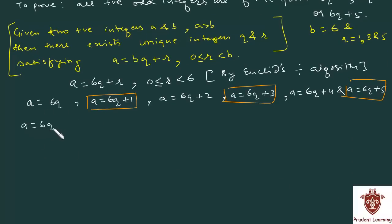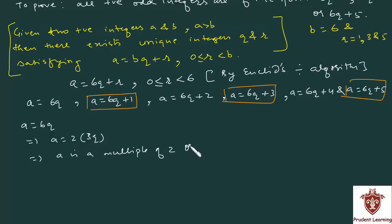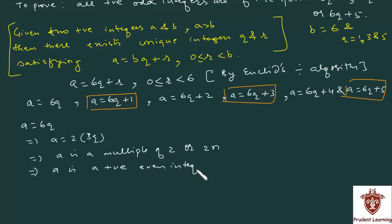If a is equal to 6q, it can also be written as a is equal to 2 times 3q, which implies that a is a multiple of 2 — it can be written in the form 2n. Any number that is a multiple of 2 is even, so a is a positive even integer. But we are given that a is a positive odd integer. Therefore, a cannot be of the form 6q.